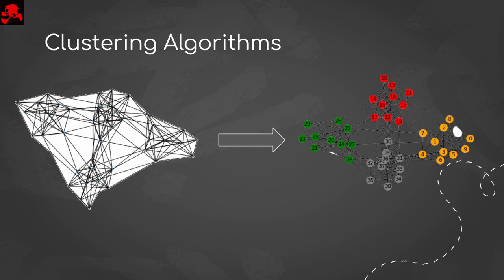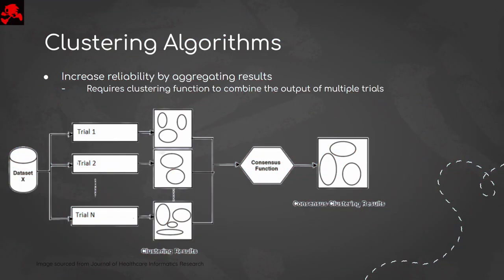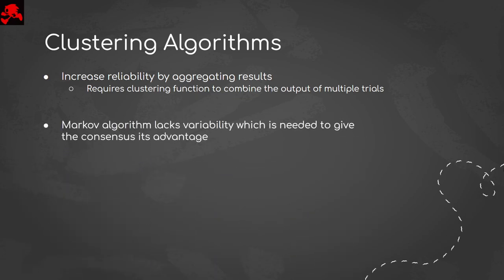First is clustering algorithms. For the sake of reliability, we wanted a way to form a consensus from the results of many different community simulations. As input into our consensus, we needed an initial community detection algorithm which produced a degree of variation over separate trials. This ruled out the Markov algorithm we discussed in class, as its reliance on deterministic matrix multiplication produced little to no variance between trials.